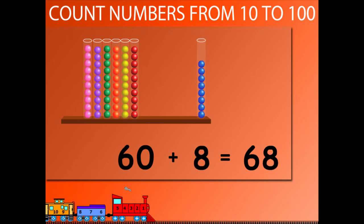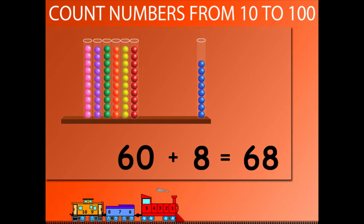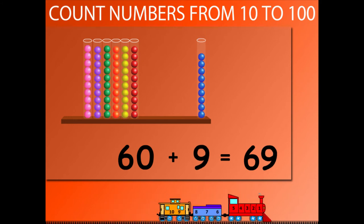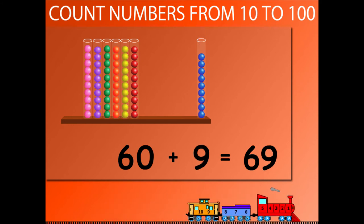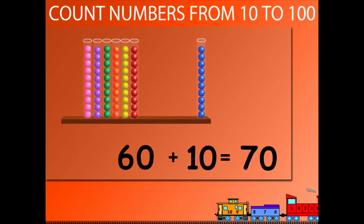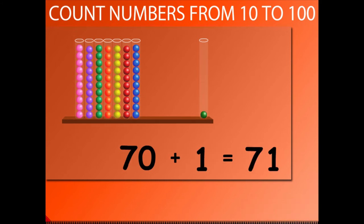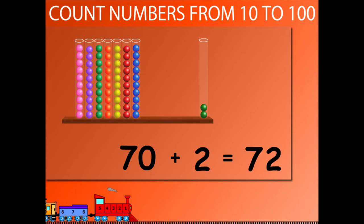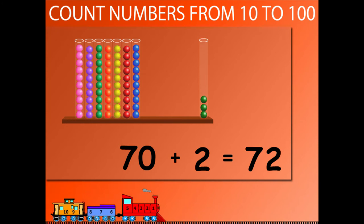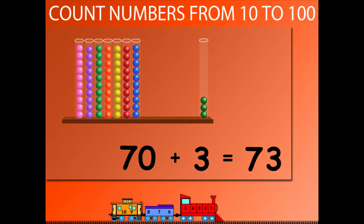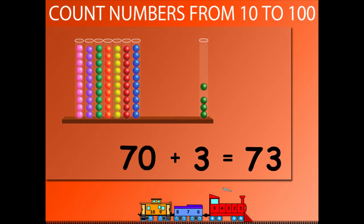60 plus 8 is equal to 68. 60 plus 9 is equal to 69. 60 plus 10 is equal to 70. 70 plus 1 is equal to 71. 70 plus 2 is equal to 72. 70 plus 3 is equal to 73.